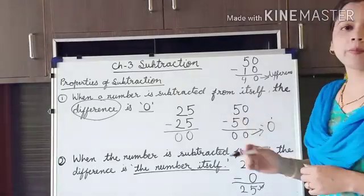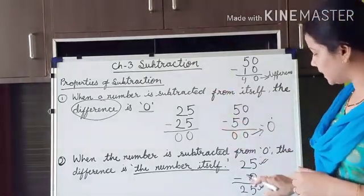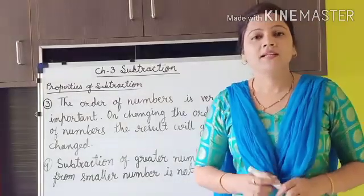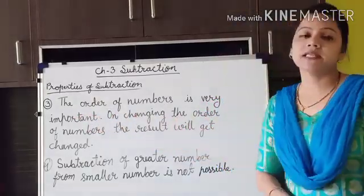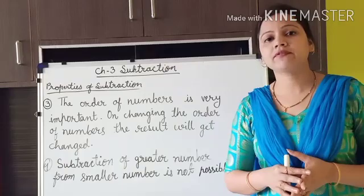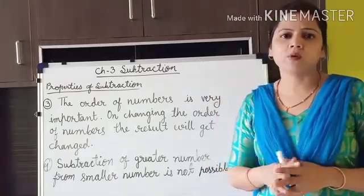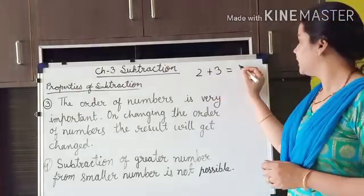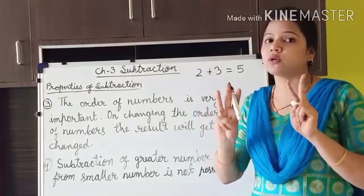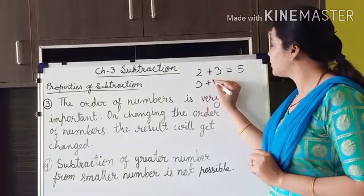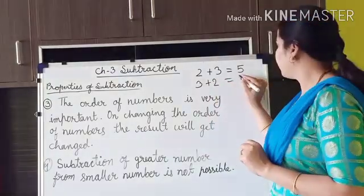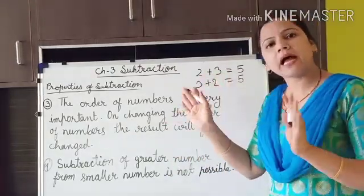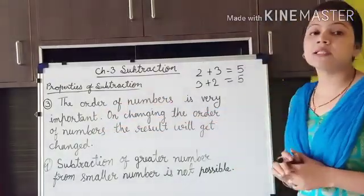Hope you have understood these two properties. Pause this video and write these properties with the two examples in your maths copy. Now the third property of subtraction is that the order of numbers is very important. In addition we already saw that the order does not matter — 2 plus 3 gives 5, and 3 plus 2 also gives 5. But in subtraction, the order of numbers is very important.